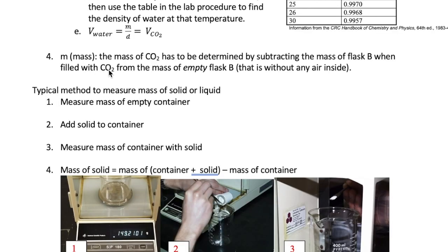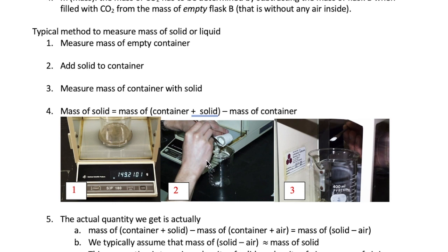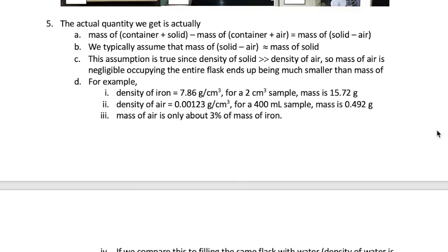Lastly, we need to discuss how to obtain the mass of CO2. This is not as easy as measuring the mass of water that we just did, so let's discuss why not. Typically, if we want to measure the mass of solid or liquid, we do the following. We measure the mass of the container alone, we then add solid to the container, and then measure the mass of the container with the solid. We then get mass of the solid by subtracting the mass of the container plus solid minus the mass of the container only. This is what we did earlier when we calculated the mass of water in our flask.